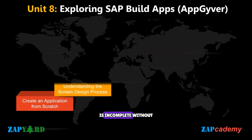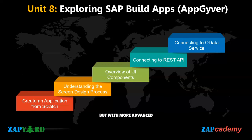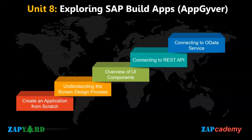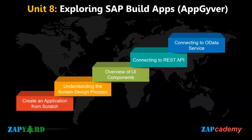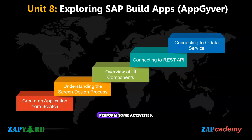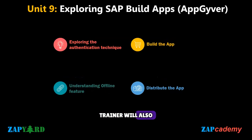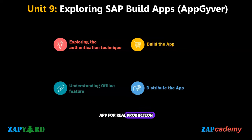SAP Build is incomplete without SAP Build Apps, which is the rebranding of AppGyver but with more advanced features. Using this no-code, low-code tool, we will create an application from scratch. Participants will understand the screen design process and learn the different UI components. To make the SAP Build App more relatable to the SAP world, we will connect it to REST API and show data. We will also connect our app with OData services and explore authentication techniques, offline features, and finally build and distribute the app for real production usage.